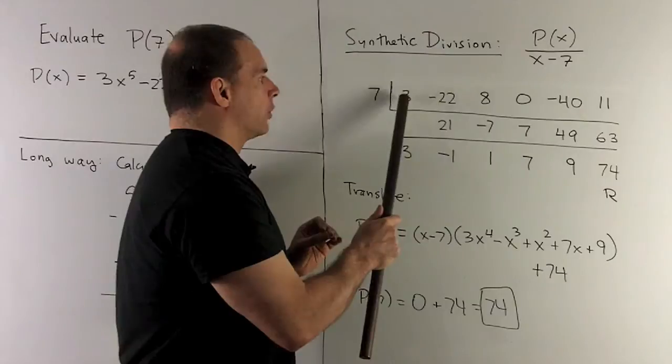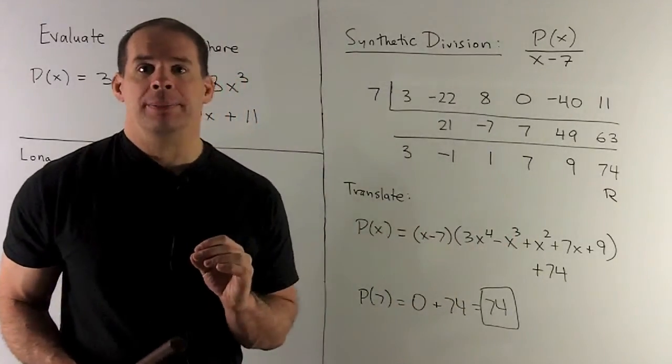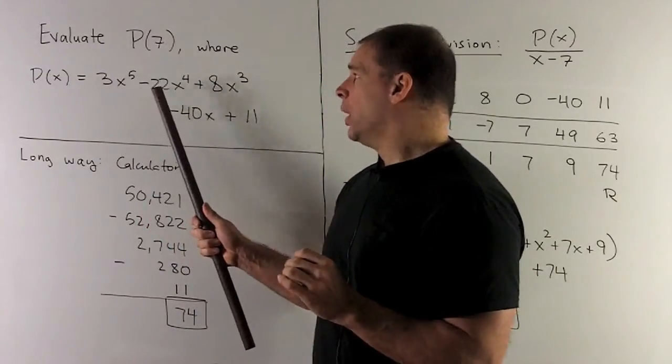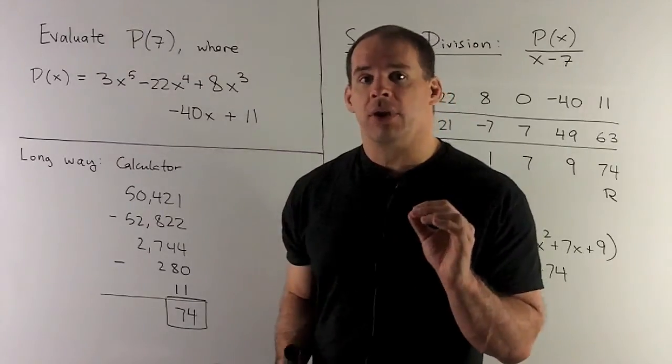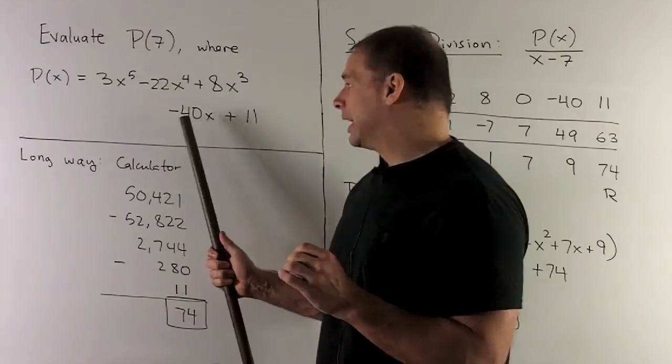Then we'll look at my polynomial. I load all the coefficients in, in decreasing order of degree. So that means I would start with 3, go to minus 22, go to 8. Okay, there's no X squared term here, so we need to be careful. The coefficient of X squared is going to be 0 minus 40, 11.